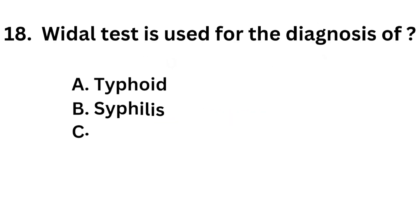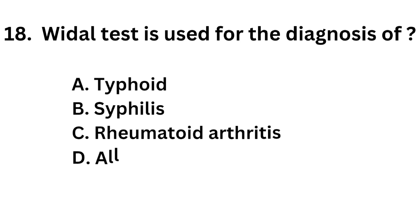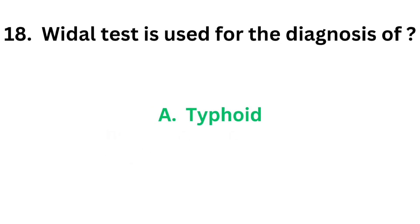Question number 18. Widal test is used for the diagnosis of: Option A: Typhoid. Option B: Syphilis. Option C: Rheumatoid arthritis. Option D: All of these. The correct answer is Option A, Typhoid. Widal test is used for the diagnosis of typhoid.